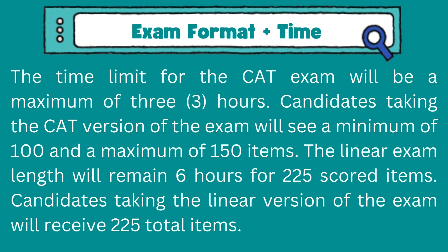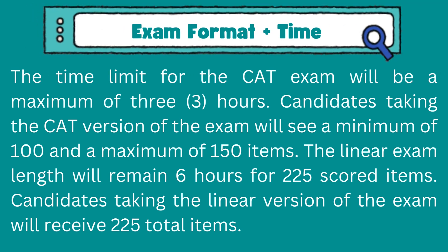Exam Format and Time: The time limit for the CAT exam will be a maximum of 3 hours. Candidates taking the CAT version of the exam will see a minimum of 100 and a maximum of 150 items. The linear exam length will remain 6 hours for 225 scored items. Candidates taking the linear version of the exam will receive 225 total items.